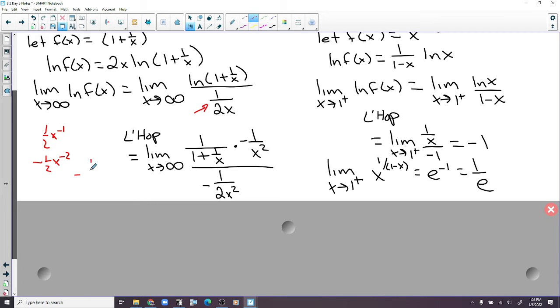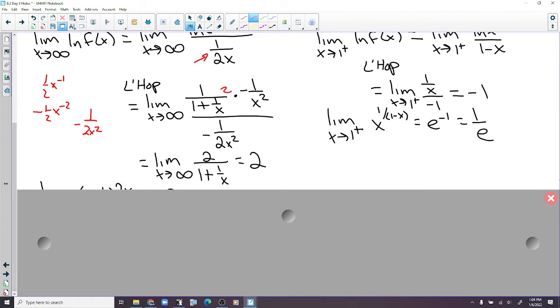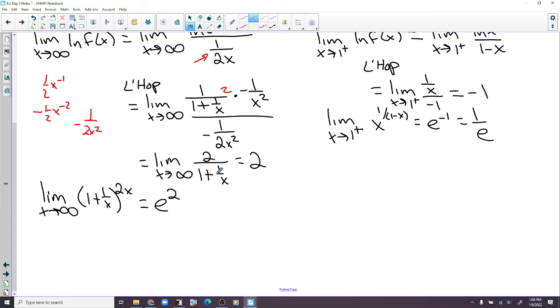That's why it's negative 1 over 2x squared. The negative 1 over x squareds cancel. And then we can multiply by the reciprocal of 1 half, so we're multiplying by 2 there. And when we plug infinity, we just get 2 because that piece will be 0 right there. So we end up with e squared.